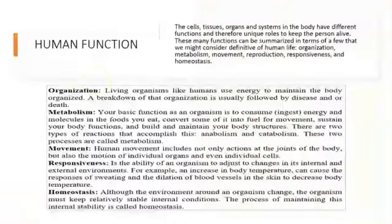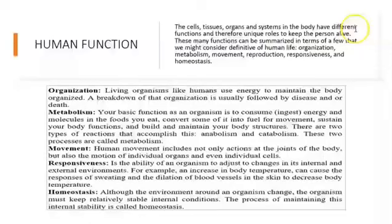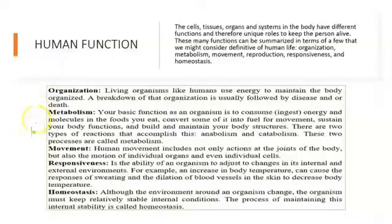The next topic is human function. All these cells, tissues, organs, and systems are going to work together in order to keep that person alive. In order for us to be alive, we need to have certain characteristics such as, for example, organization, metabolism, responsiveness, movement, and homeostasis.